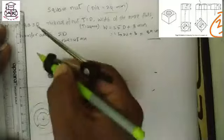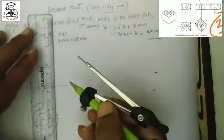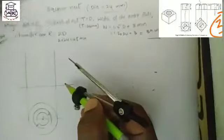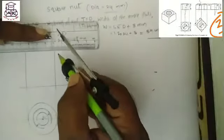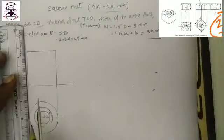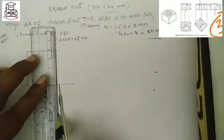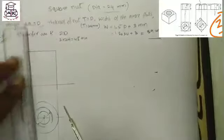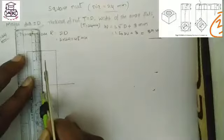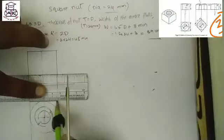After completing this portion, take 24 mm — that is the height of the nut. Draw vertical lines for the upper portion. Draw a center axis, and then see the procedure for how to make a square box.